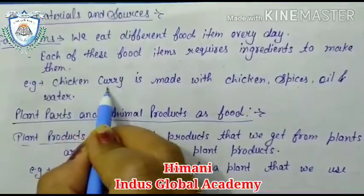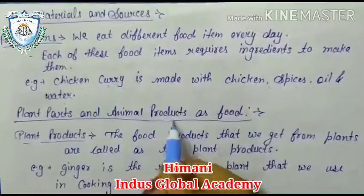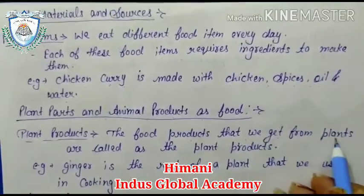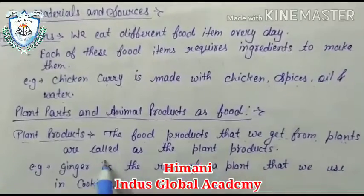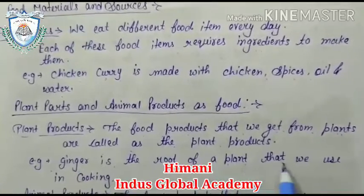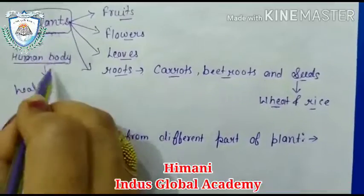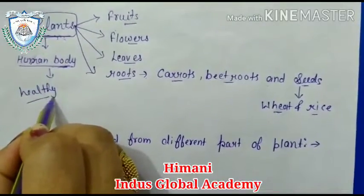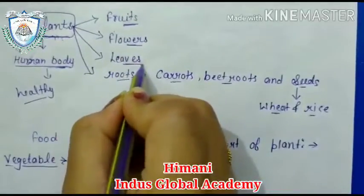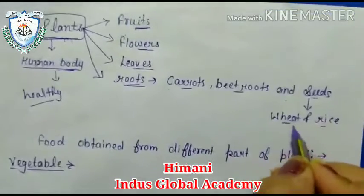Now, plant parts and animal products as food. The food products that we get from plants are called plant products. For example, ginger is the root of a plant. Plants are a source of a wide variety of nutrients required to keep the human body in perfect healthy condition. Humans consume everything from the plant — like fruits, flowers, leaves, roots such as carrot and beetroot, and seeds like wheat and rice.